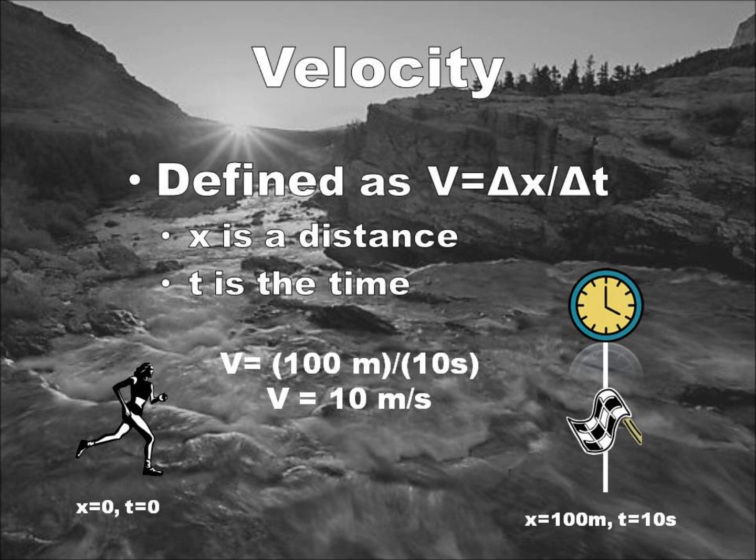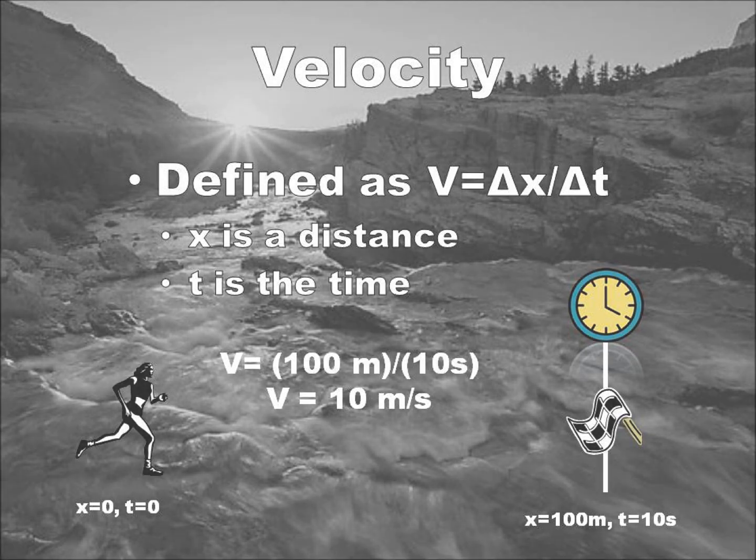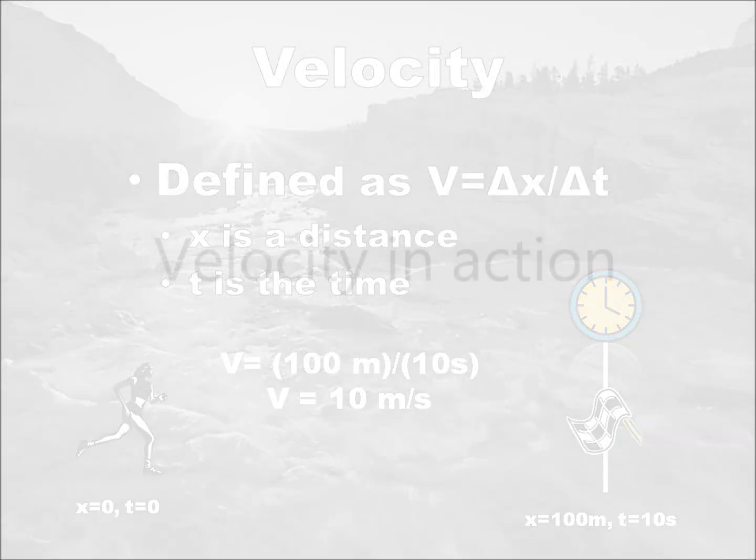An easy to understand example is a runner. We have a watch we can use to time the runner, and we know how far the runner will go. Thus, we can calculate the velocity. In this case, the runner went 100 meters and took 10 seconds, giving her an average velocity of 10 meters per second.